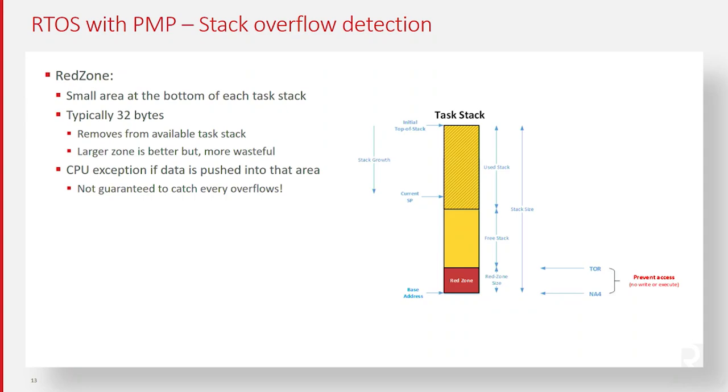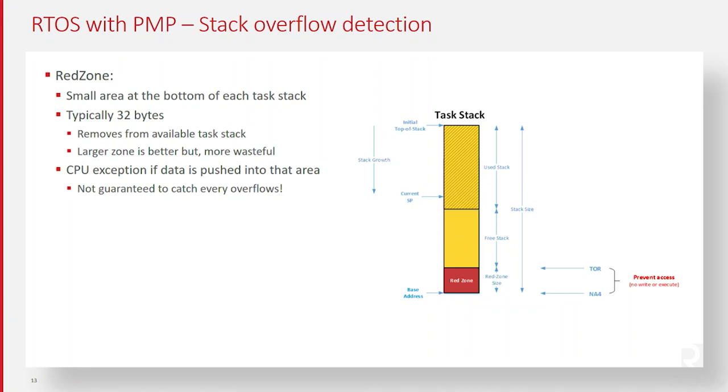This is an expanded view showing that little red zone at the bottom. If the stack grows to a point where a write is done into the red zone, the PMP generates an exception saying you're not allowed to write there. Most likely you're overflowing your stack, and we want to catch that as a fault. The ideal approach is to put a large red zone at the very bottom of the stack — anytime something is written there, it generates an exception.